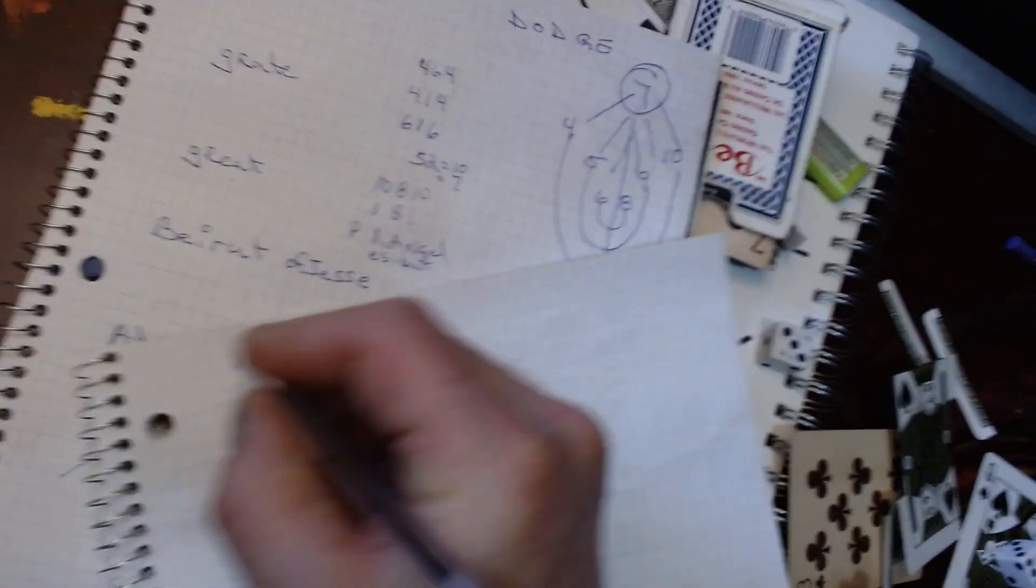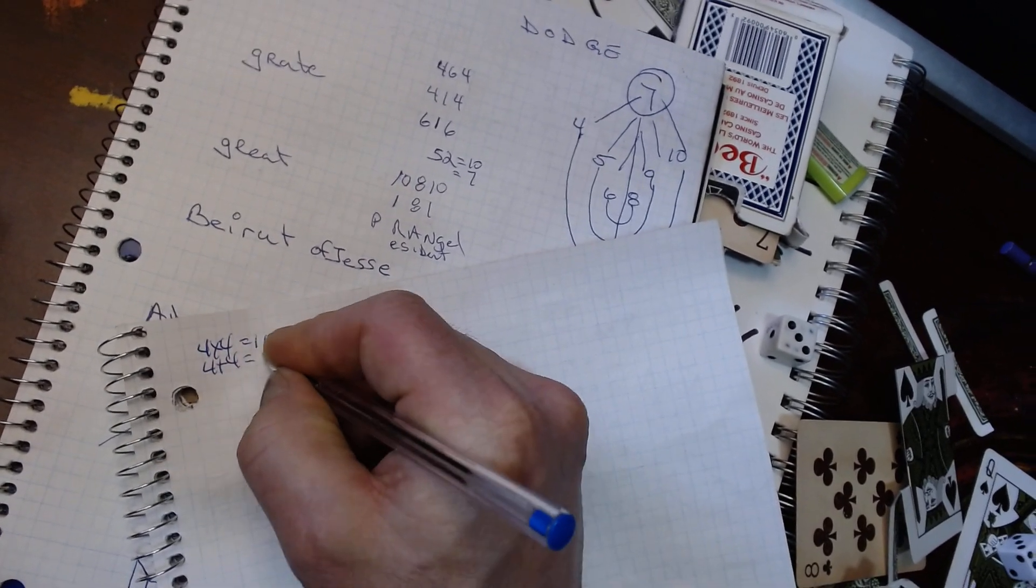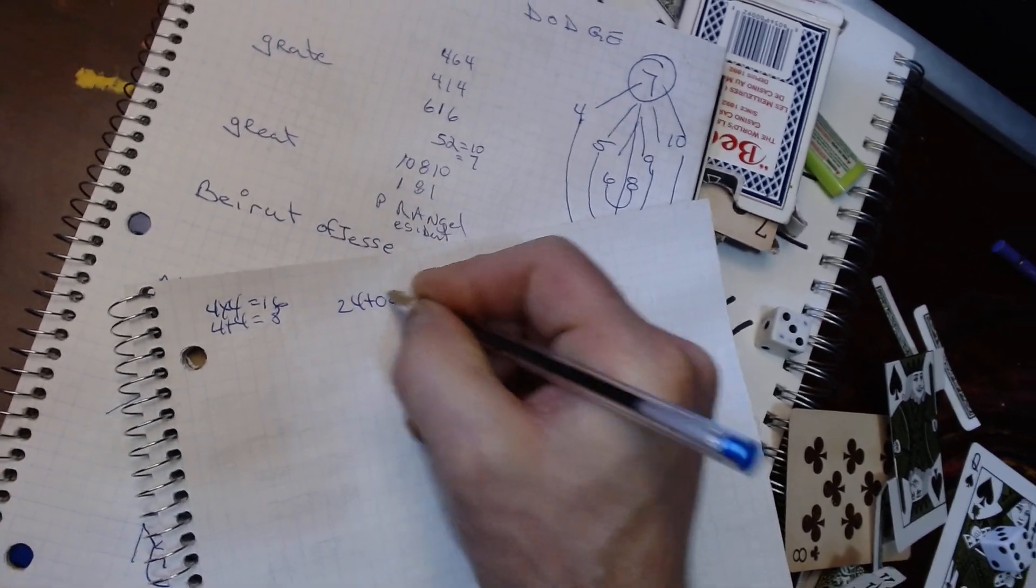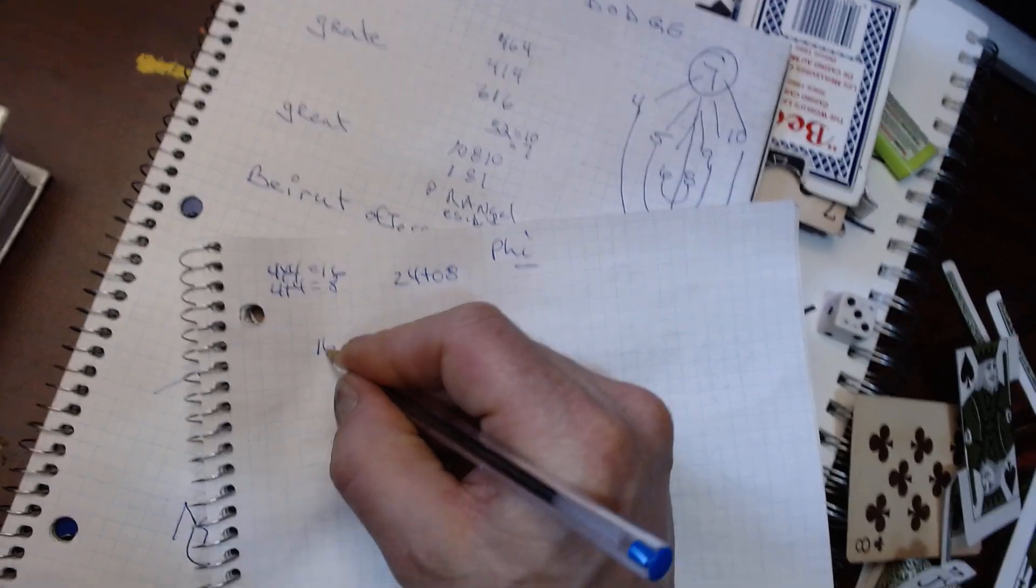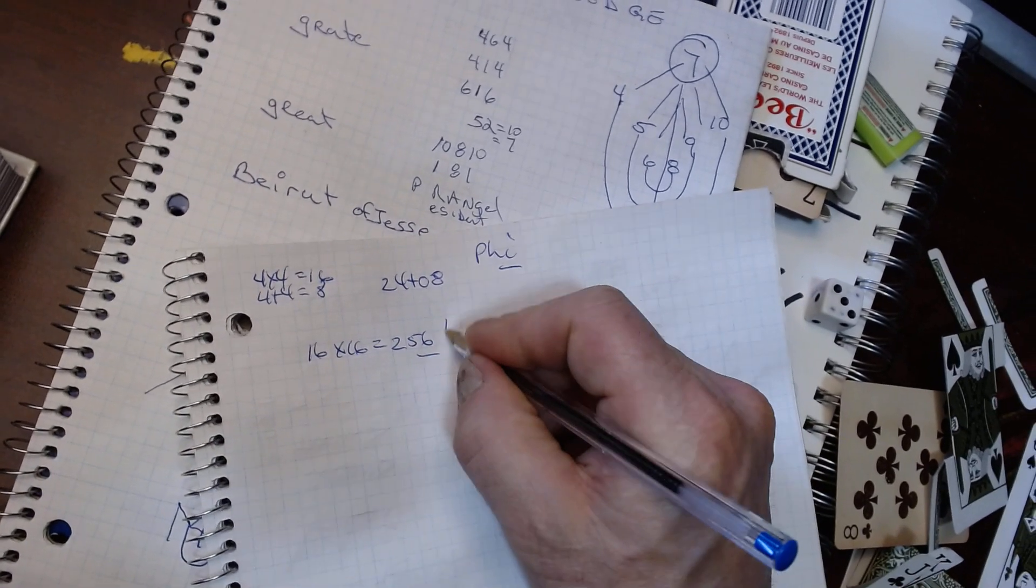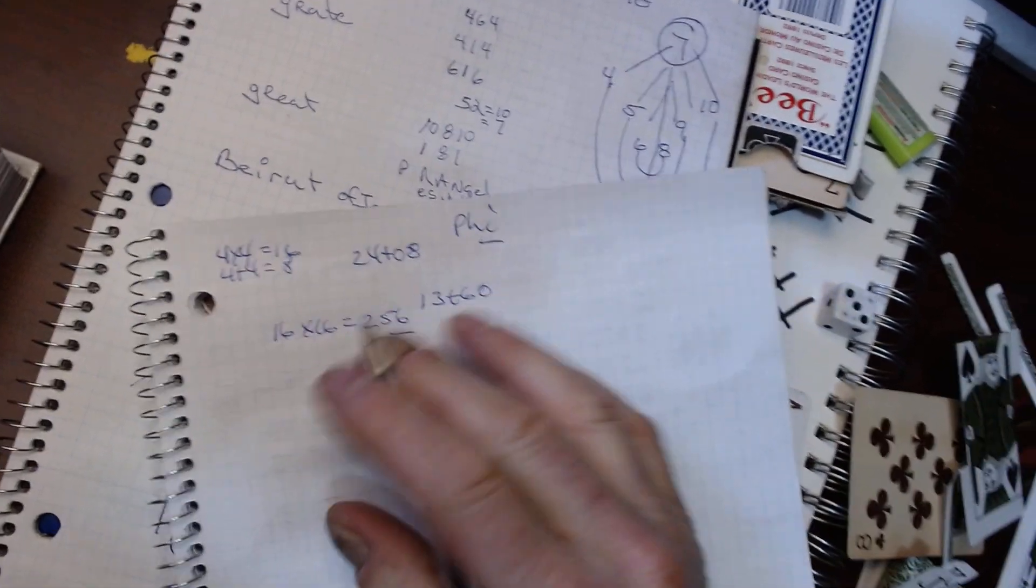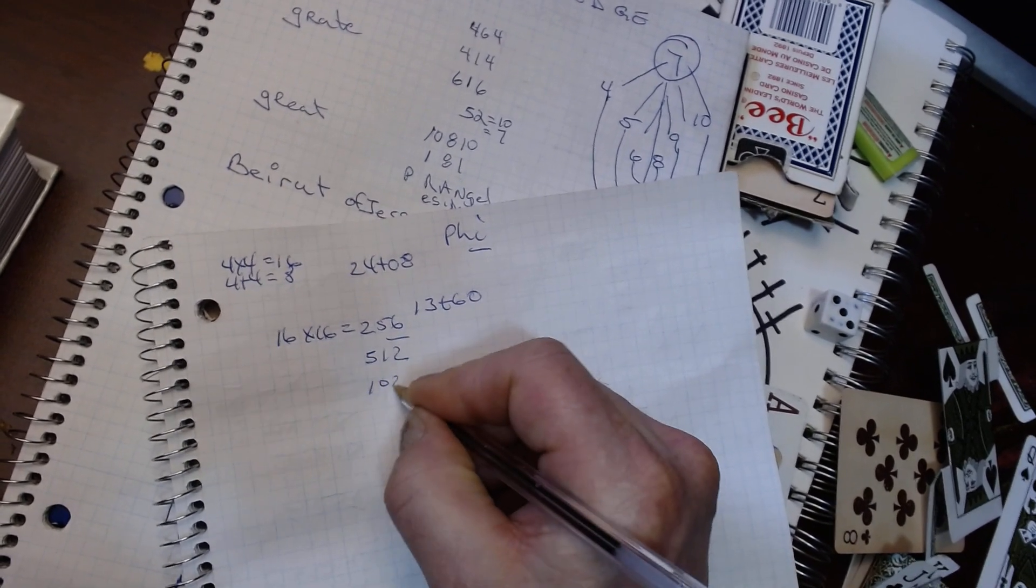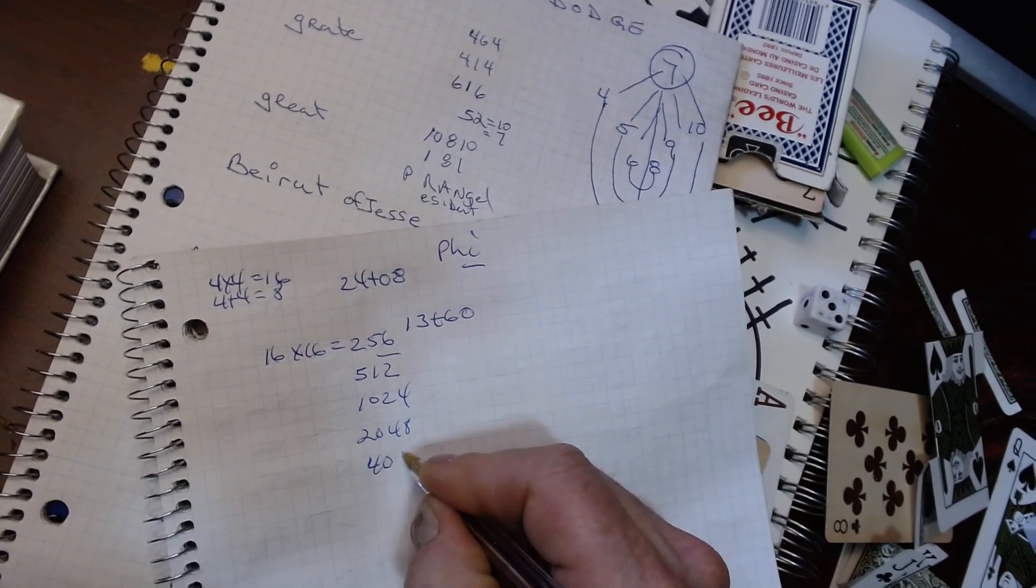We're trying to find out 4 times 4, 4 plus 4 equals 8 and 16. 24 and 0, 8. Pie. Let me think. 16 times 16 equals 2, 2, 256, which equals to 13 and 60. Okay. Let's just forget about that. But times 2 is 5, 12. And then 1,024. And then 20, 48. And then 40, 96.